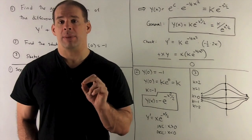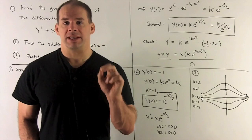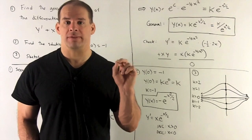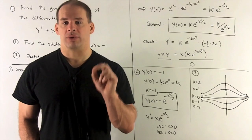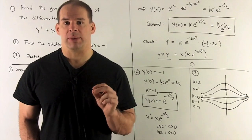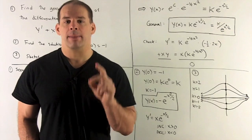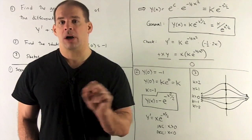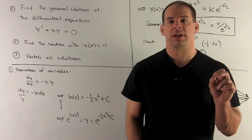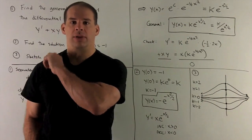We can check our answer by taking the solution and putting it back into the original differential equation. What's y prime? The k stays, and by the chain rule for e to a function, we get e to the function times the derivative of the function. The derivative of minus x squared over two: the two comes down, reducing the exponent, giving minus x. So y prime equals k times e to the minus x squared over two times minus x, which is just the original function multiplied by minus x — exactly what the differential equation requires.